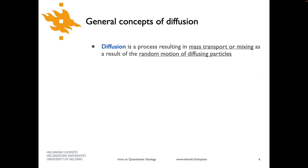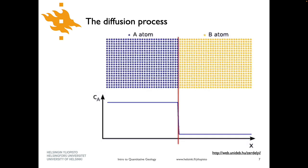In terms of the general definition, when we talk about diffusion we're talking about a process that results in mass transport or mixing as a result of random motion of diffusing particles. This might sound a little weird, but the concept of diffusion is nothing unusual. If I opened a bottle of perfume at the front of the classroom, the smell would gradually move through the room as a result of random interactions of the molecules in the air, taking time to propagate from here to the back of the classroom with the concentration getting weaker as it goes — all of these things are basically a diffusion process.